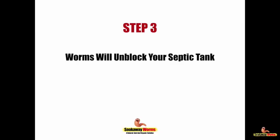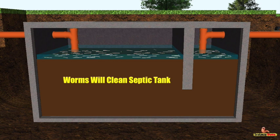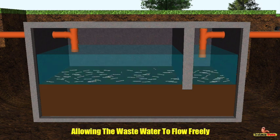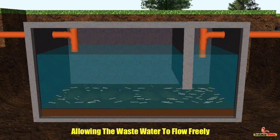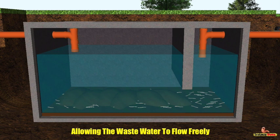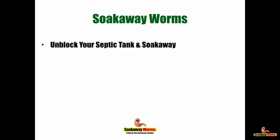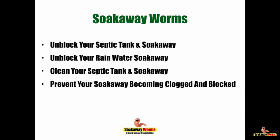Soak away worms will also clean and unblock your septic tank. While the worms unblock your soak away, they'll also be burrowing, eating and cleaning out your septic tank — eating that sludge, fat and grease. Not only will they unblock and clean your entire septic tank and soak away system, they'll keep them unblocked and prevent them from becoming clogged again, allowing wastewater to flow freely from the house to the tank and naturally into the soil. They'll also unblock your rainwater soak away and save you thousands of pounds in repair costs.